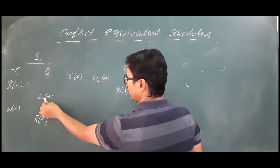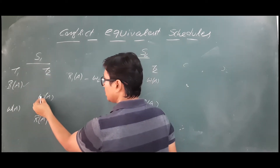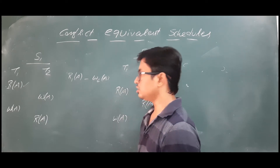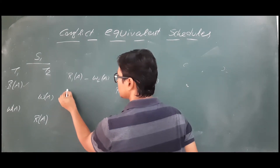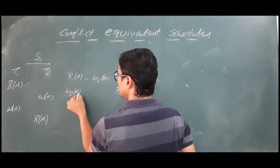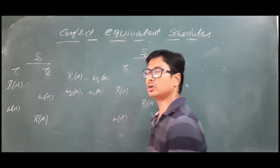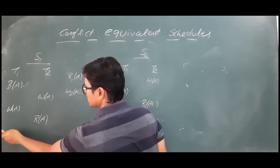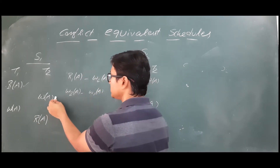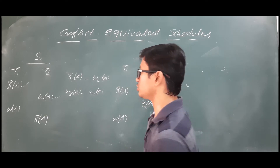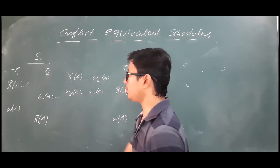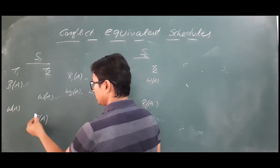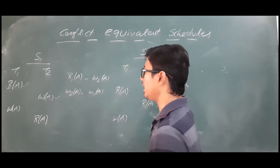So we have found the conflict operations with the Read A operation. The next operation in the schedule is Write A from transaction T2. We will find Write A and Write A — both are write operations on the same data item, so it is a conflict. The order is W2(A) to W1(A), so that is one conflict operation. With this operation I found the conflict operations possible.